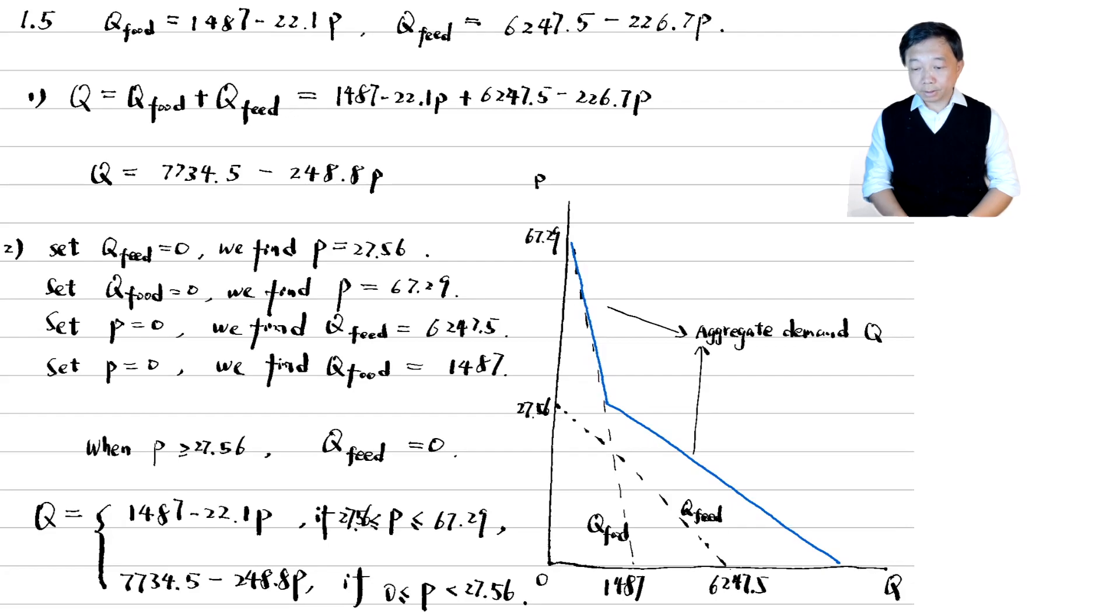The feed demand curve hits the price axis at 27.56 dollars. When the price is above 27.56 dollars, the feed demand will be 0 because it's too expensive for farmers to use corn to feed animals. So the part of the total demand curve where the price is above 27.56 dollars is the same as the food demand curve. The part of the total demand curve where the price is below 27.56 dollars is the horizontal sum of the two demand curves. The aggregate demand curve has a kink. The corresponding total demand function is as follows.